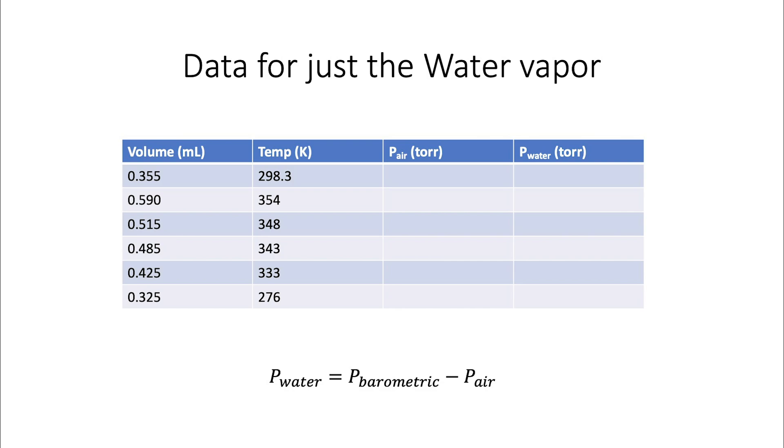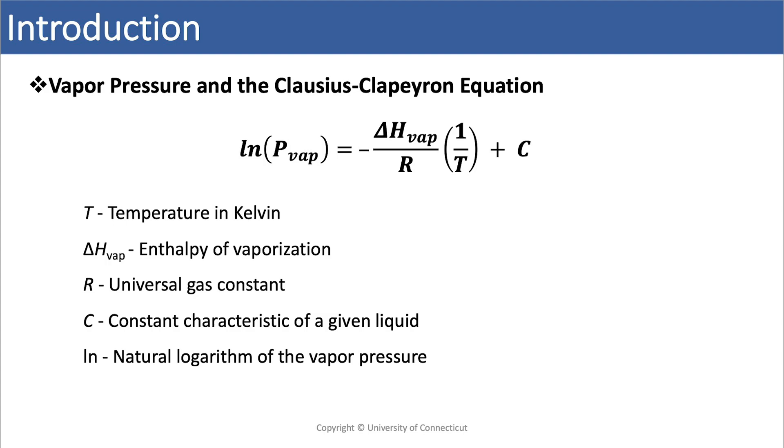Then you can do a subtraction to figure out how much of the barometric pressure was actually water vapor pressure, which gets you close to this equation.